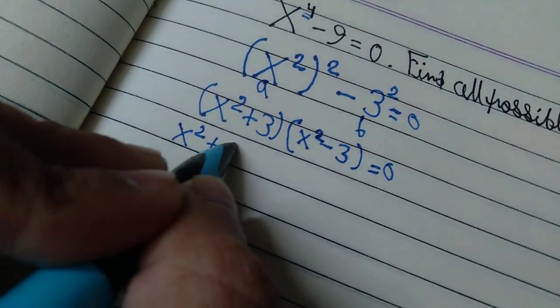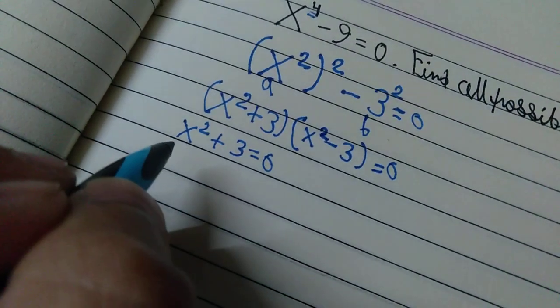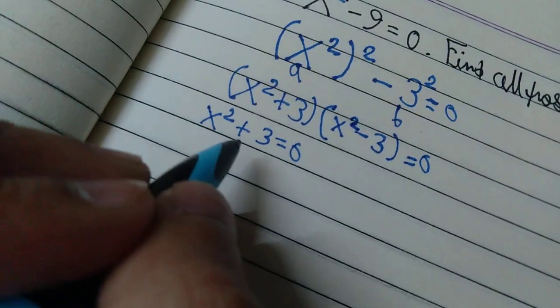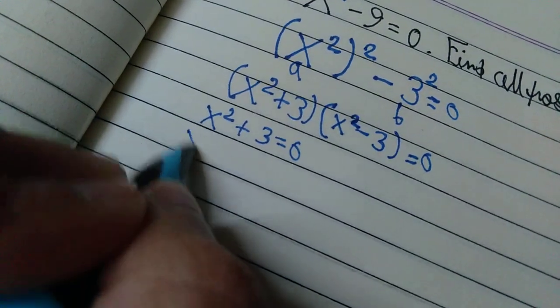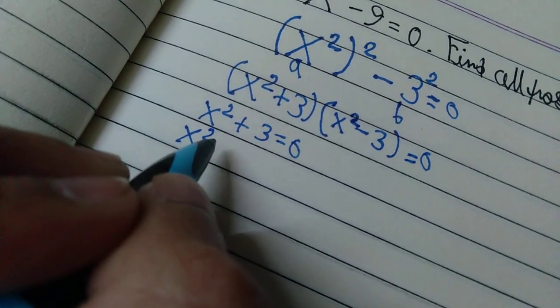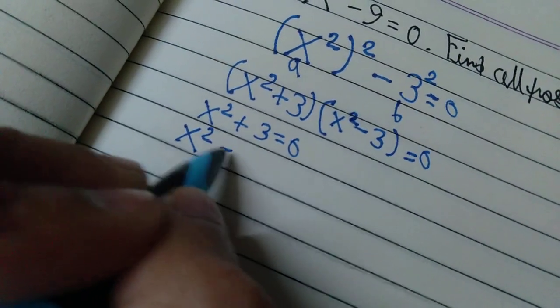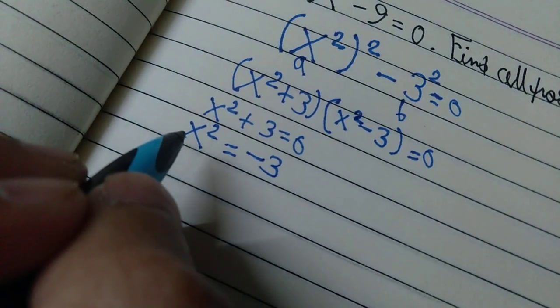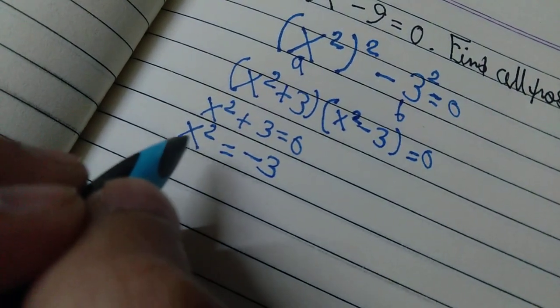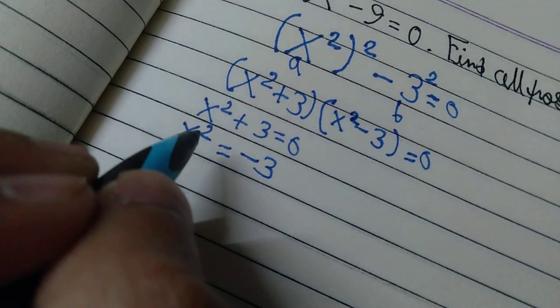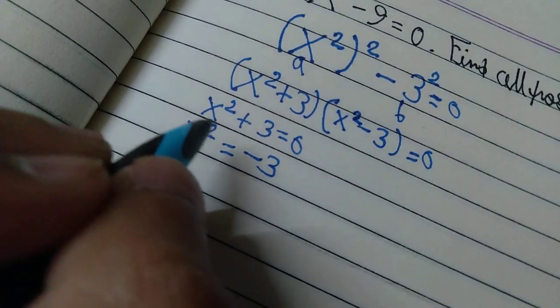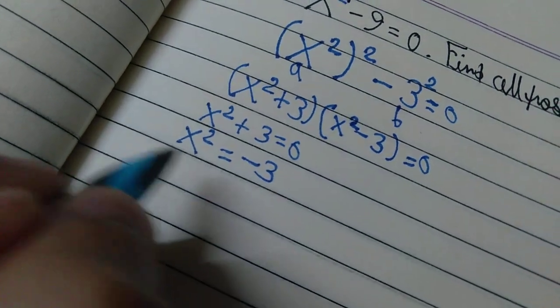squared plus 3 equals 0, what we gotta do is subtract 3 from both sides, and after that we will get x squared equals negative 3. Whenever we encounter something squared, we will take the root of it to remove the square. In this